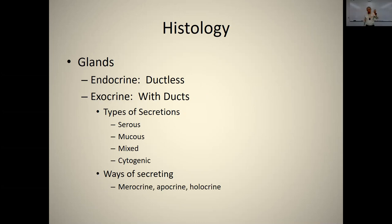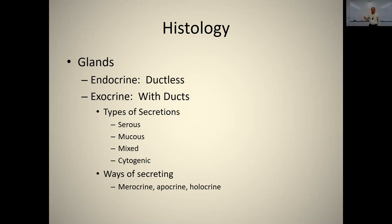Endocrine glands are ductless glands that secrete hormones — we'll cover those in the next chapter on the endocrine system. Exocrine glands have ducts, and there are different types of secretions: a serous secretion is a watery fluid, mucus is mucus, and mixed glands secrete both — like salivary glands, where saliva is watery but also contains mucus.